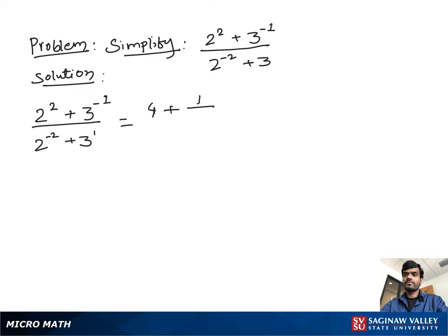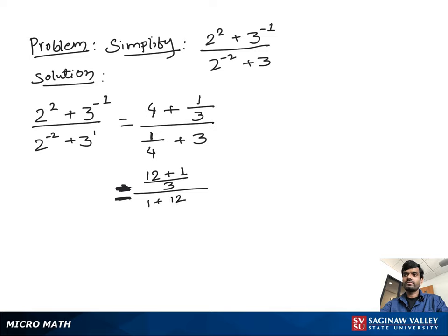For the denominator, to make the power of 2 positive we write 1 over 4, plus 3. Now we take the LCM. In the numerator, the LCM is 3, giving us 4 times 3 which is 12, plus 1, over 3. In the denominator, we take LCM of 4, giving 1 plus 3 times 4 which is 12, over 4.